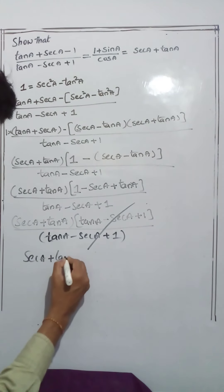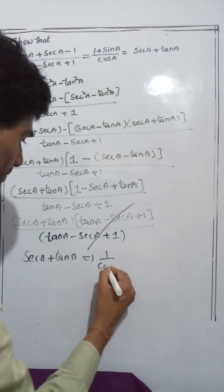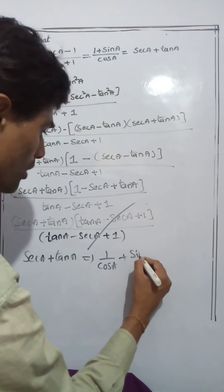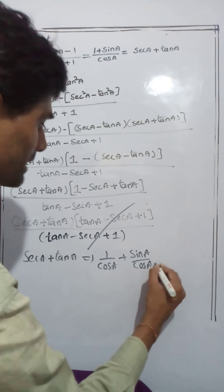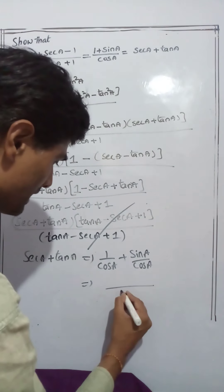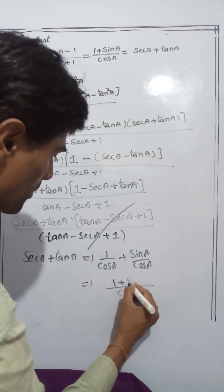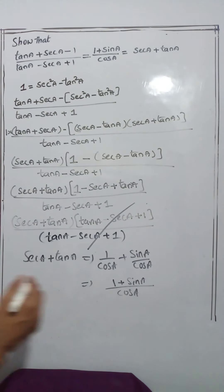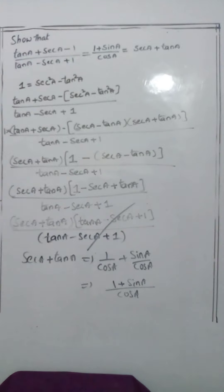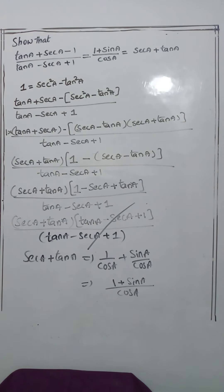We are left with sec a + tan a as the answer. Writing the reciprocal of sec a as 1/cos a and the trigonometric ratio of tan a as sin a/cos a, both fractions have the same denominator cos a, making them like fractions. So (tan a + sec a - 1)/(tan a - sec a + 1) = (1 + sin a)/cos a = sec a + tan a. That completes the problem.